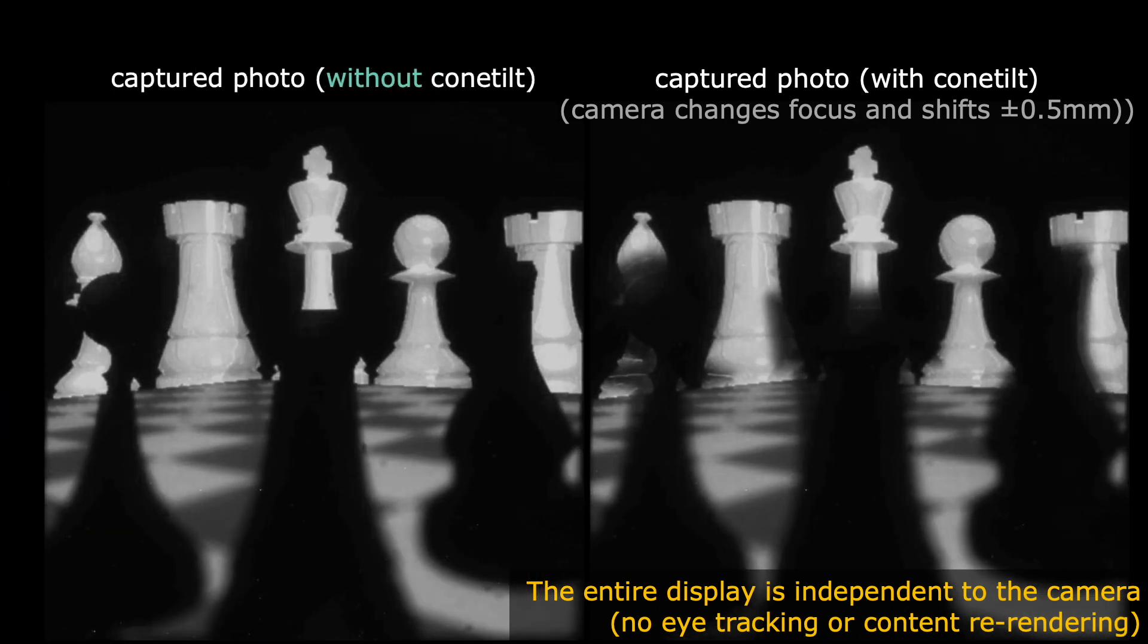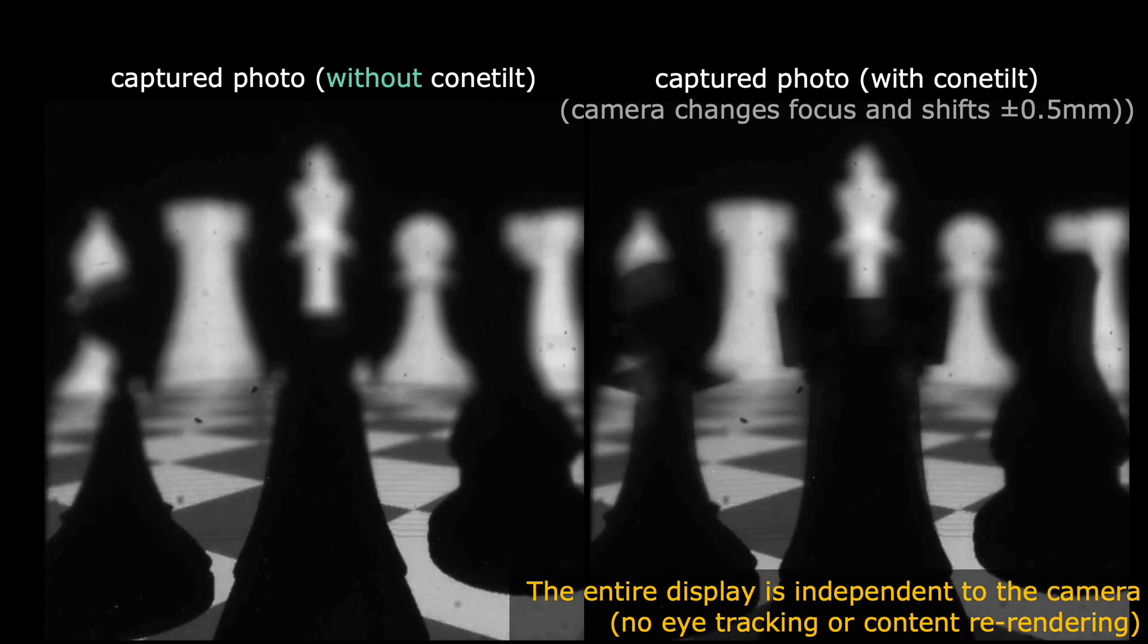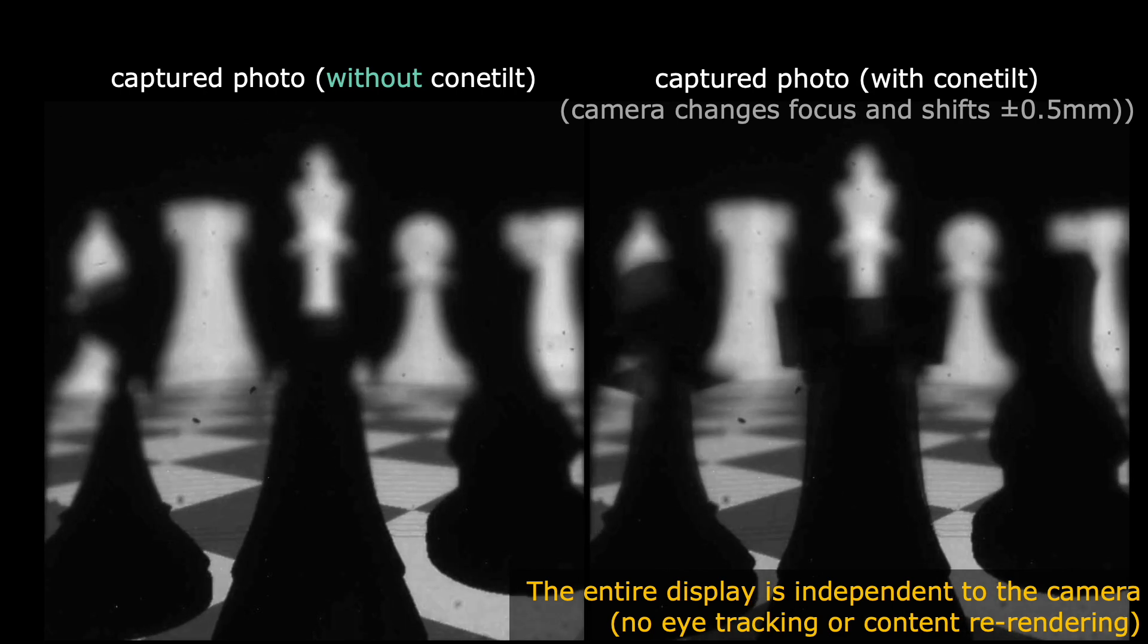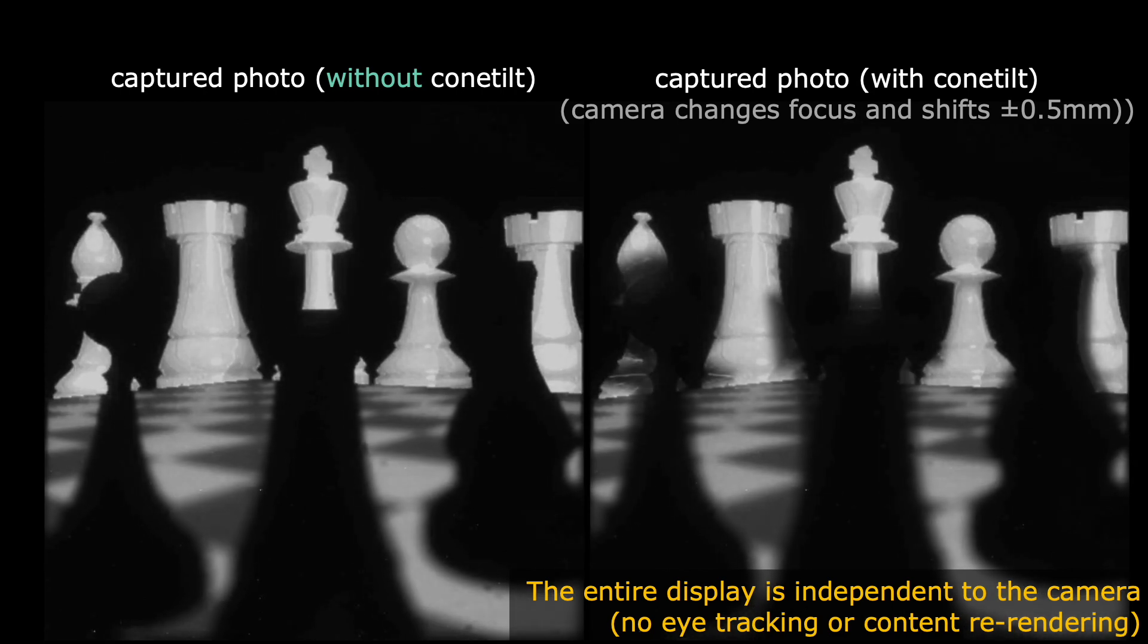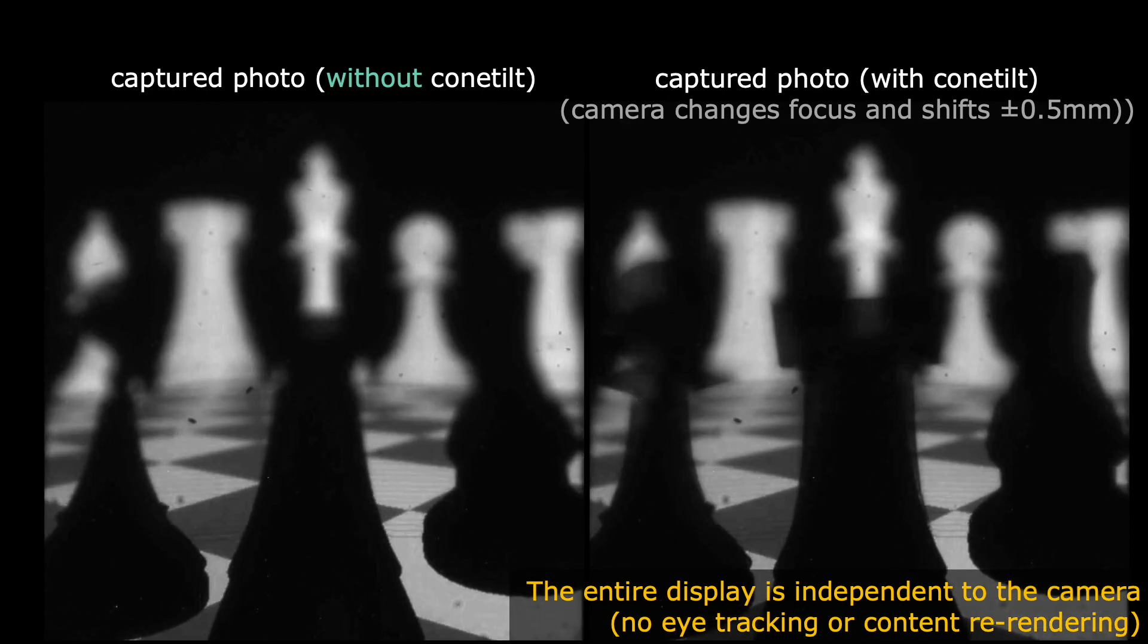Now, we compare the results without and with ConeTilt. As can be seen, ConeTilt effectively creates the occluders in the foreground. Notice that the occluders automatically come in and out of focus as the camera changes its focus.